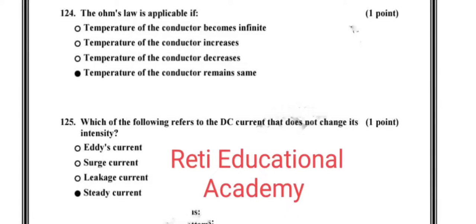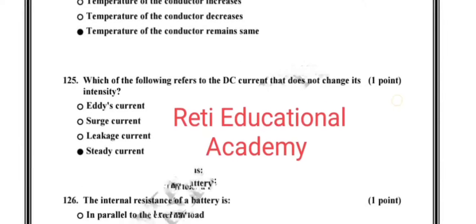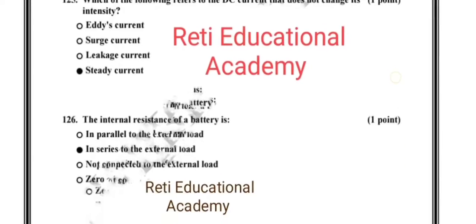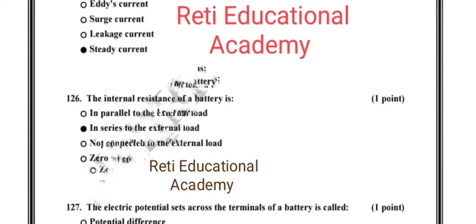Question number 124: Ohm's law is applicable if, and the correct option is, if the temperature of the conductor remains the same. Question number 125: which of the following refers to the DC current that doesn't change its intensity? The correct option is steady current. Question number 126: the internal resistance of a battery is in series to the external load.